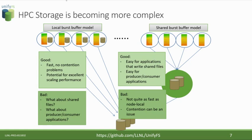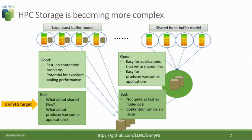Both models also have their cons. The local burst buffer model does not work well for shared files, since data written on node zero is not visible to a process on node four, and it's equally challenging for producer-consumer applications. For shared burst buffer models, it's not quite as fast as node-local since it's not attached to the compute node — there's network traffic at minimum, and contention could be an issue depending on how burst buffers are allocated. For UnifyFS, what we are targeting is the issues related to using local burst buffers for applications that want to use shared files.